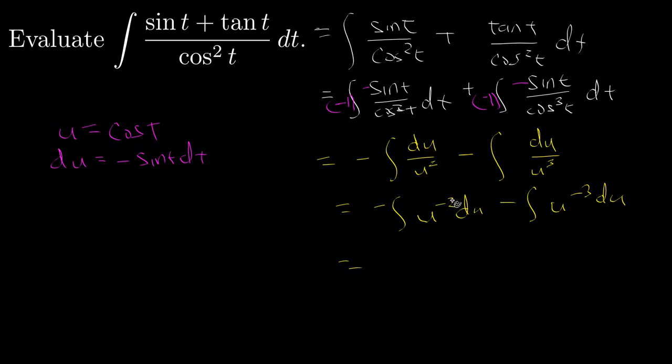So we'll add 1 to the exponent that will result in u to the minus 1, multiply by the reciprocal, minus 1 times minus, so I'll just get a positive u to the negative 1.